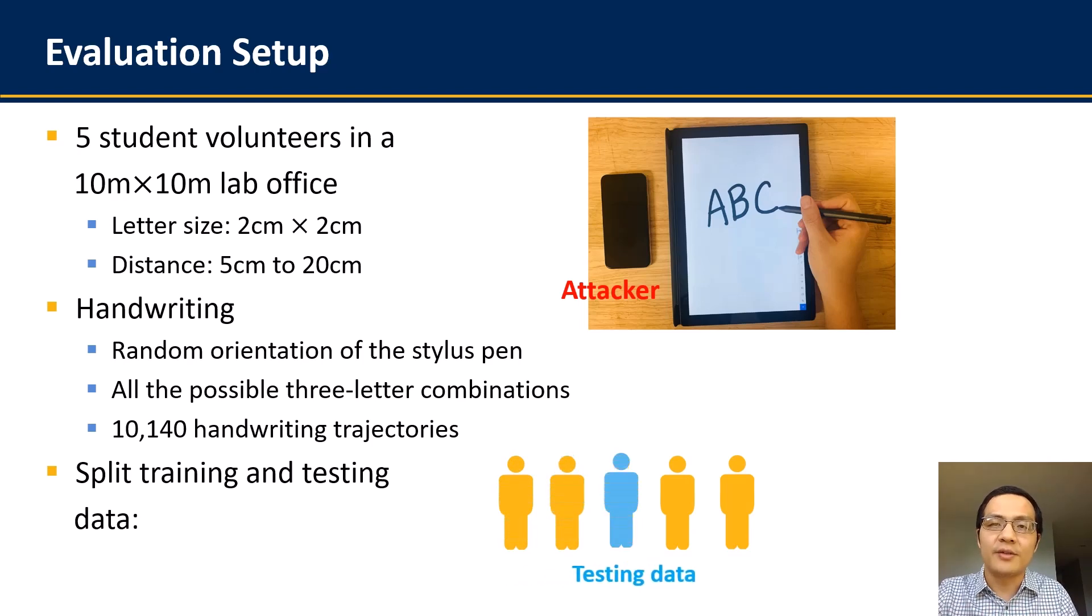And then, we split these trajectories for training and testing data in a round-robin manner, such that each student volunteer will use the other four volunteers' data as training, and then test the trained recognition model over this volunteer's testing data. And all the experimental results eventually are the average over all the five volunteers.